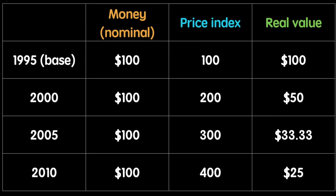We'll compare all of our figures against the base year from here. If in 2000 the prices have doubled, then the real value of the worker's wages drops to $50. What he used to be able to buy with $50, he now needs $100 to do so. If his wages are still $100, he can now buy half as much as before.